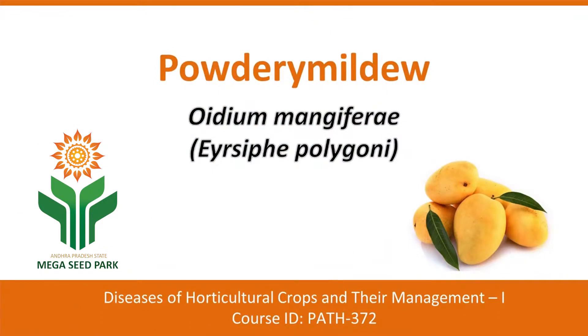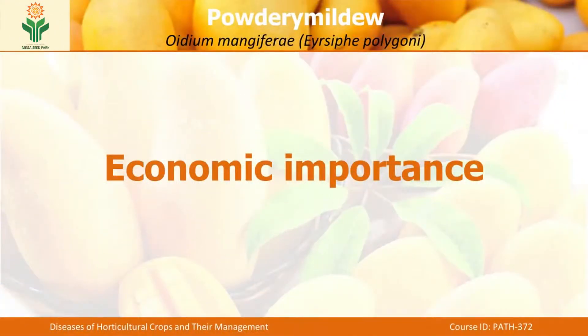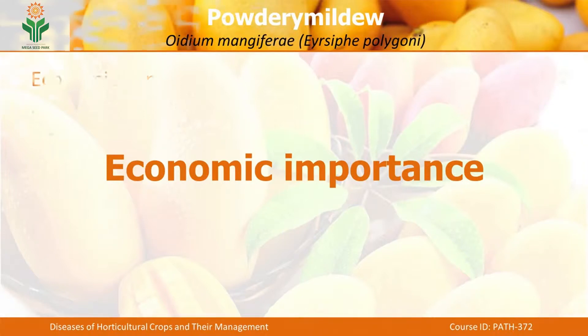What is powdery mildew? It is a white, hyaline, powdery mass containing conidia. It is caused by Oidium mangiferae — Oidium is the conidial state, and mangiferae is the genus name of this crop. The perfect state is Erysiphe polygoni. Generally this perfect state is very rare in India. This disease has very wide occurrence and is worldwide distributed.